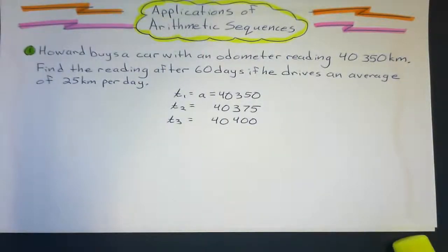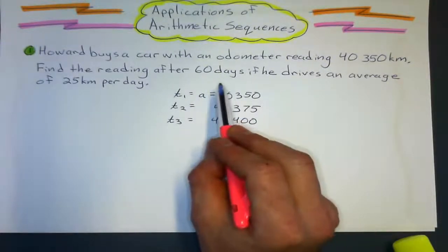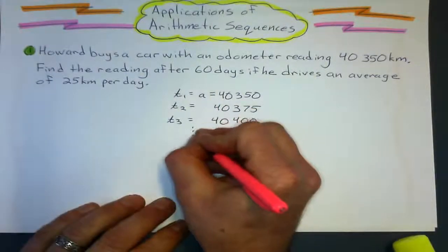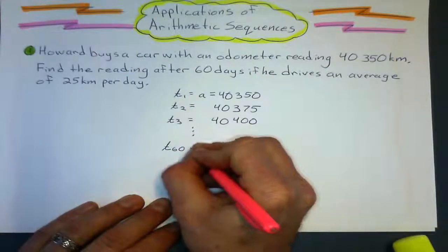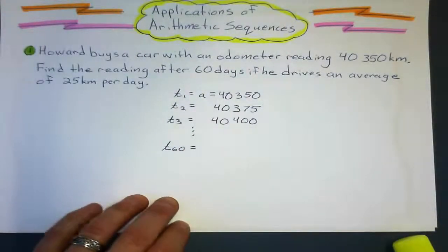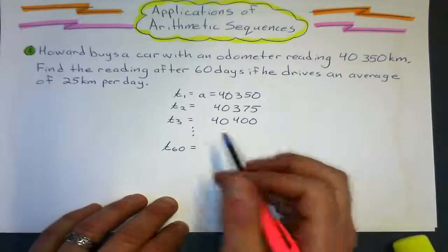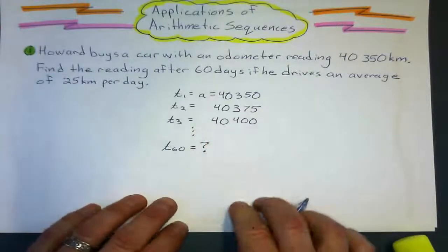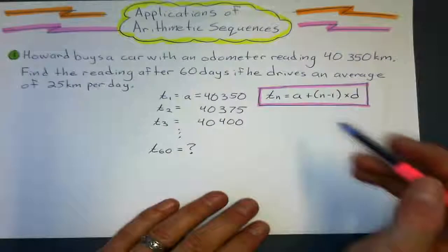And what we're asking is, on that 60th day, what will the odometer read? I want to know what the reading is going to be on that 60th day. That's not a sum problem, because if it were a sum problem, the number would be massive. So what is that reading going to be on that 60th day? So here's our formula. Let's write down the important bits.